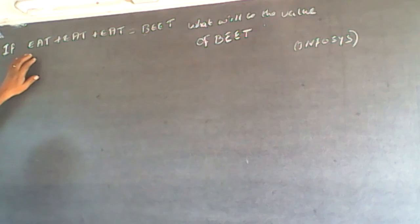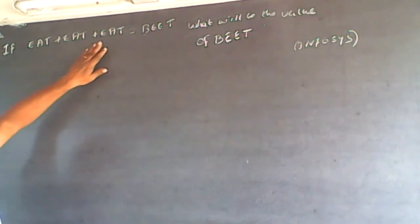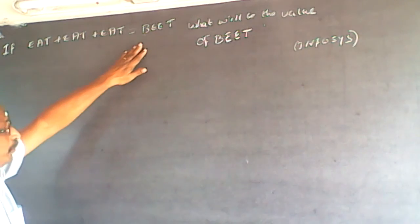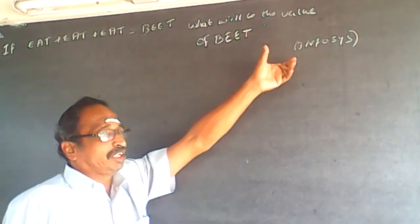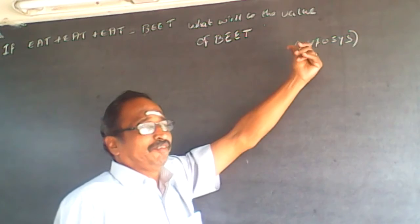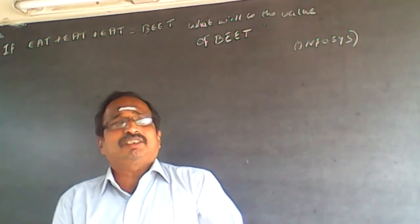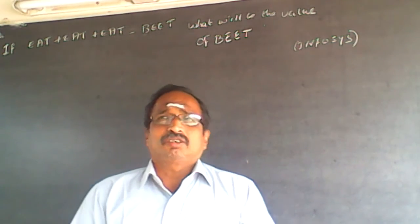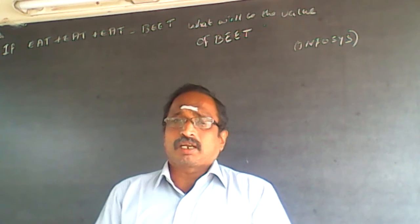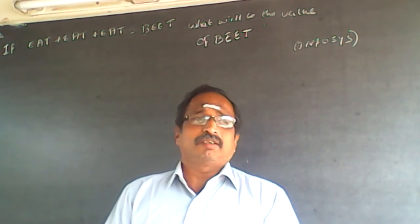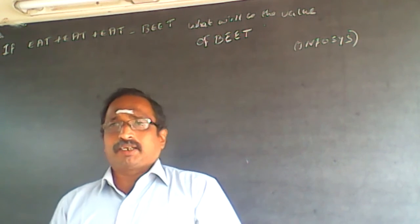The question is: if EAT plus EAT plus EAT is equal to B, what is the value of B? This question has been asked in competitive exams. You can classify this question as crypto-arithmetic, verbal-arithmetic, or analytical-arithmetic.